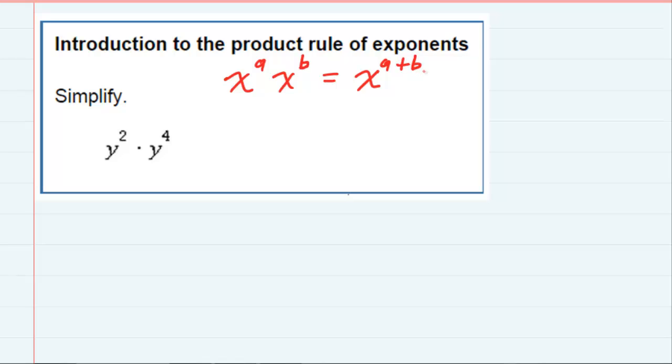So x to the a times x to the b equals x to the a plus b. In our situation down here, we have y instead of x, but they do have the same base, so I can just add those exponents and say that is y to the 2 plus 4, which would be y to the 6.